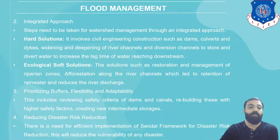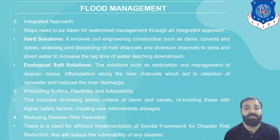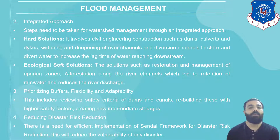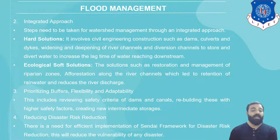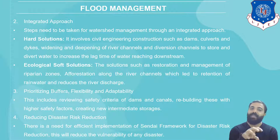Second, the integrated approach. Steps need to be taken for watershed management — that is, catchment area management — through the integrated approach. The hard solution involves civil engineering construction such as dams, culverts, dykes, widening and deepening of river channels, and diversion channels to store and divert water and increase lag time. The ecological soft solution includes restoration and management of riparian zones and forestation along river channels, which leads to retention of rainwater and reduced river discharge.